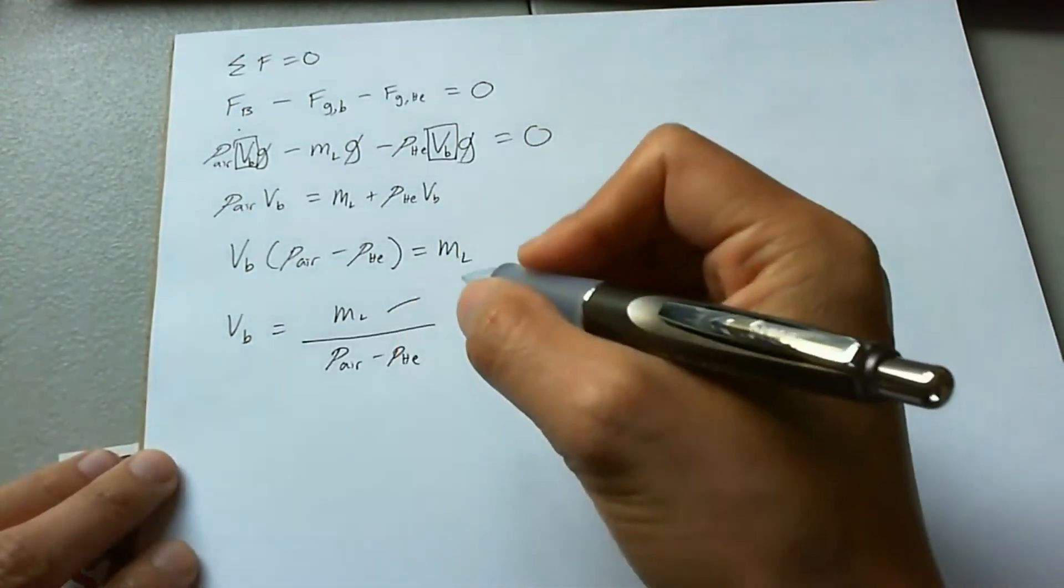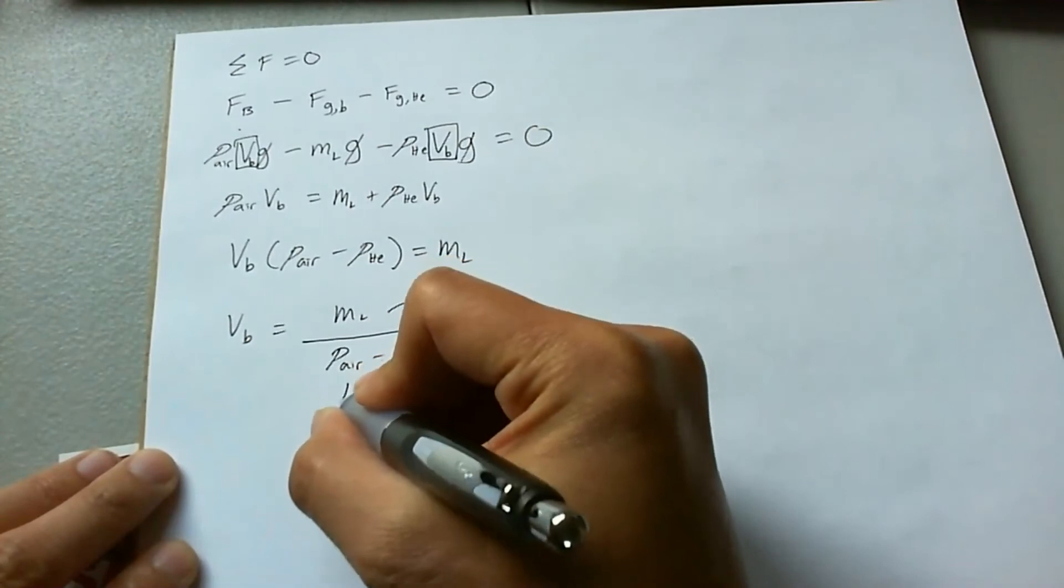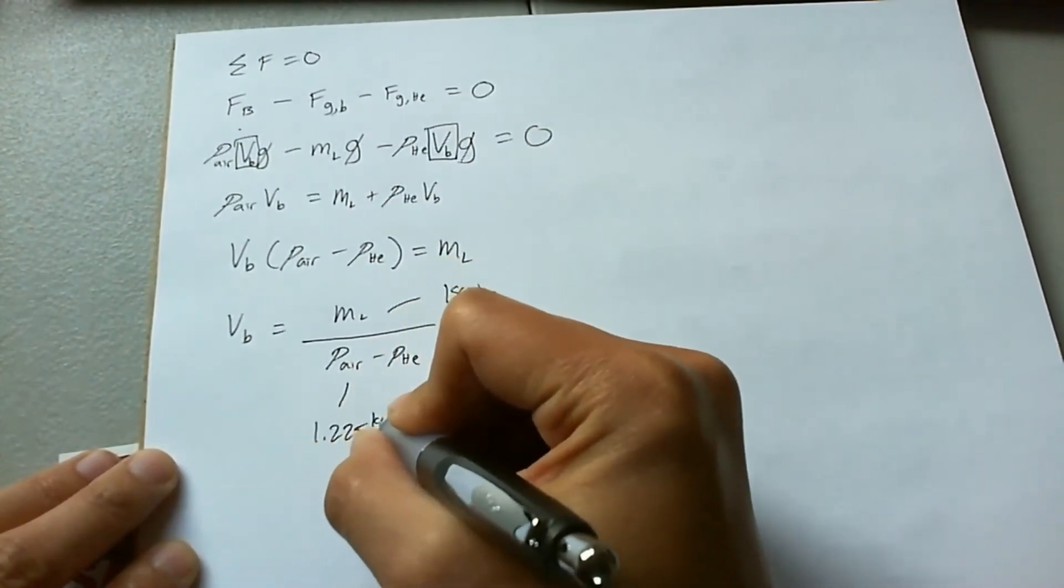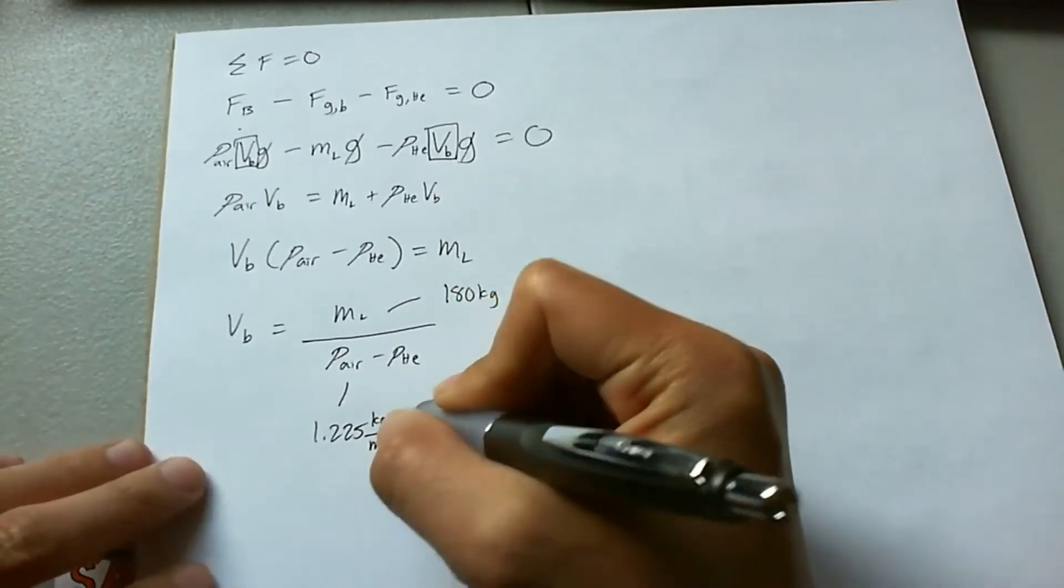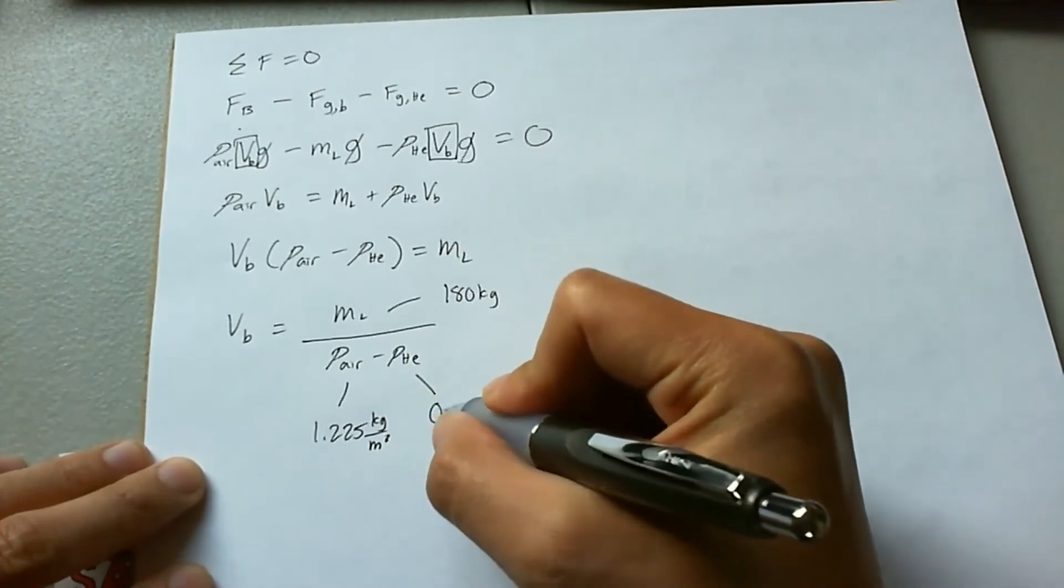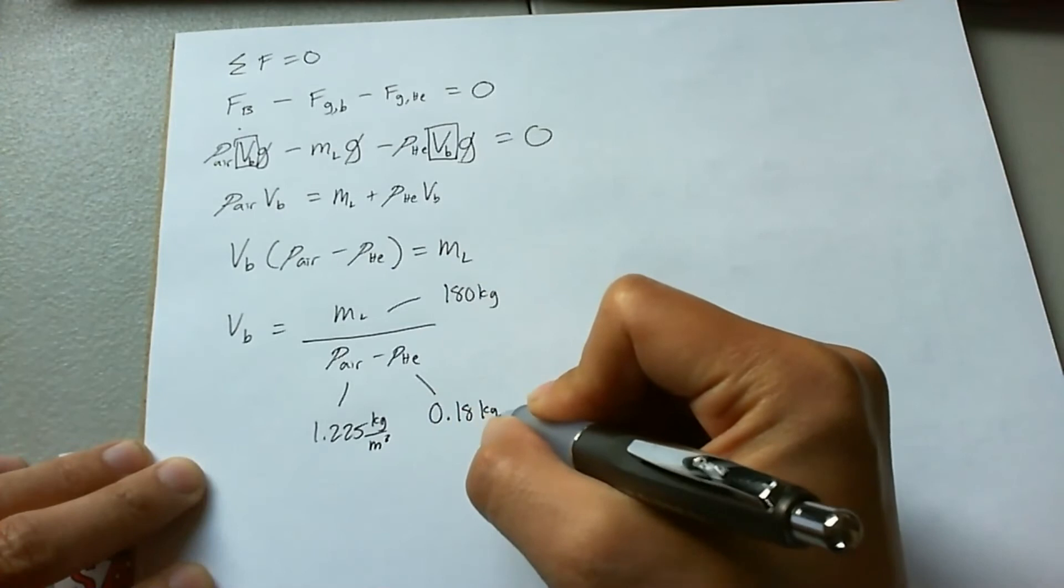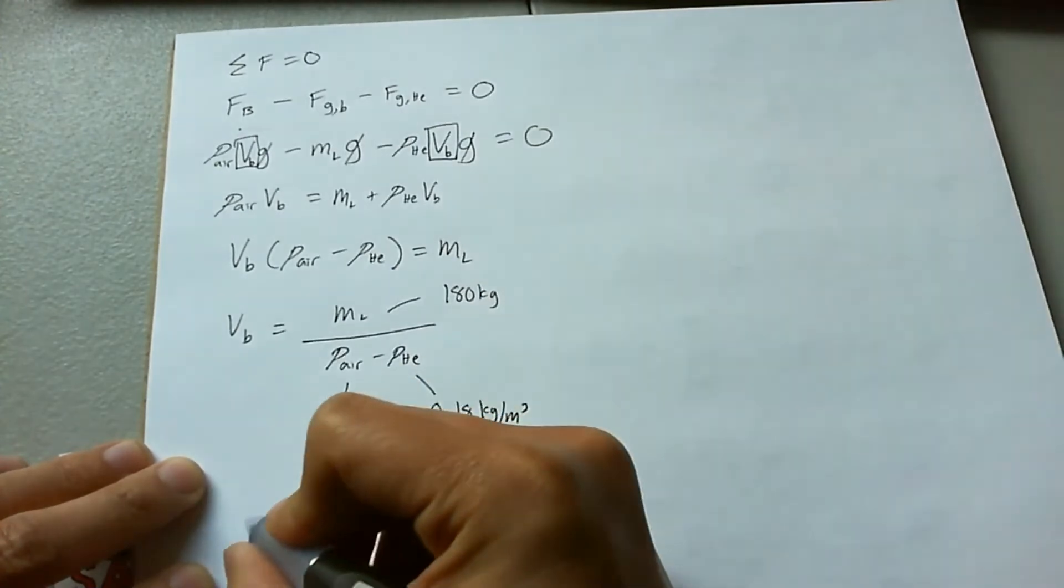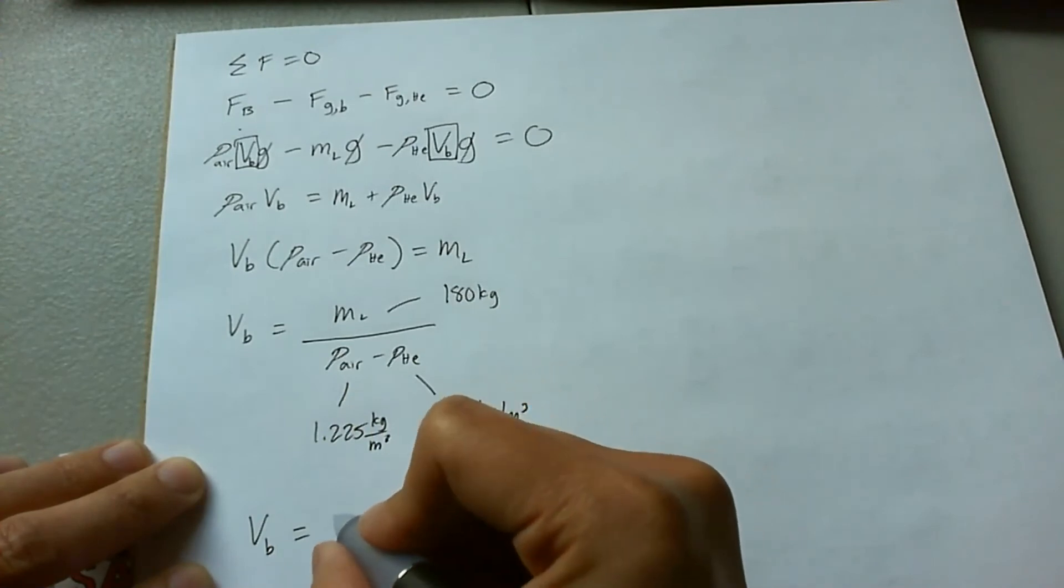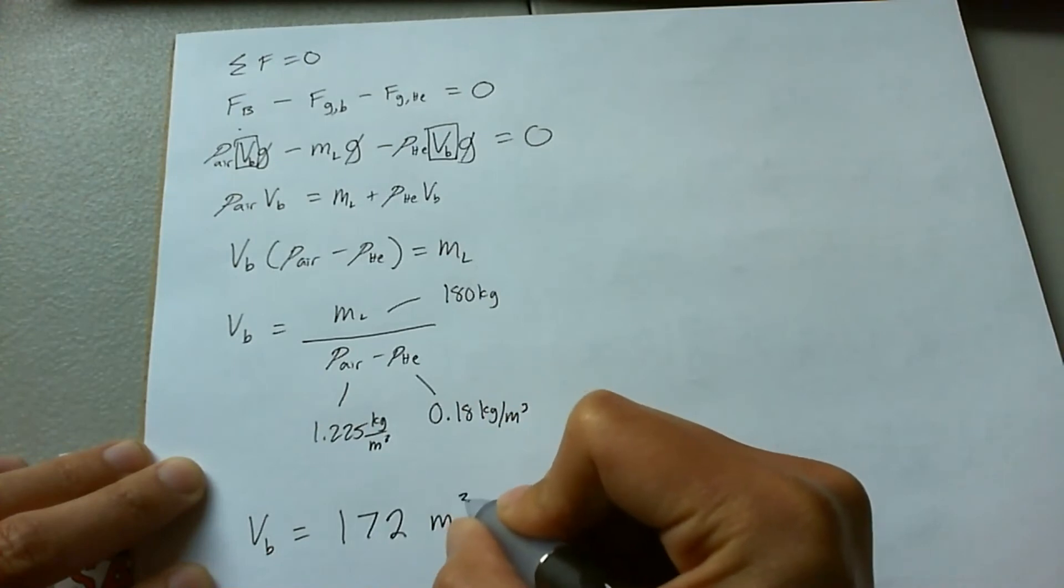The mass of the load in the problem is 180 kilograms. And the density of air is 1.225, this is stuff that you can look up on Google, so 1.225 kilograms per meters cubed. And the density of helium is 0.18 kilograms per meters cubed. So if you plug all this in, you're going to get a value finally of 172 meters cubed.